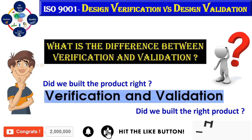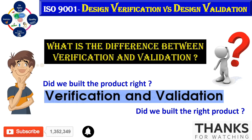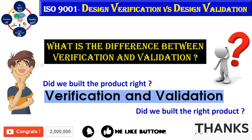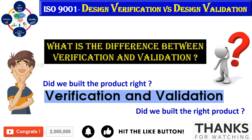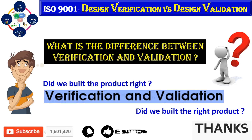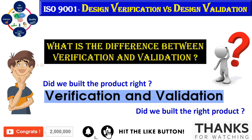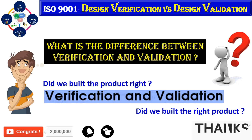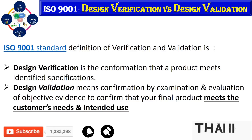Verification is basically a paper-based activity. It starts with taking all the design inputs — specifications, government and industry regulations, knowledge taken from previous designs, and any other information necessary for proper function. Validation, on the other hand, is more or less conducted on the final product or device.